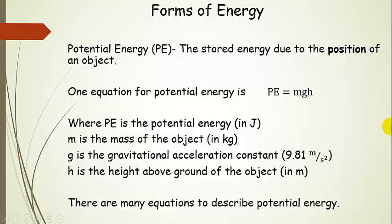Potential energy is a little bit harder to visualize, but this is stored energy due to the position of some object. There are lots of equations to describe potential energy, but one of them is: potential energy equals m times g times h. Potential energy is also in joules. m is the mass of the object in kilograms — not grams. g is the gravitational acceleration constant, 9.81 meters per second squared, and h is the height above ground of the object.